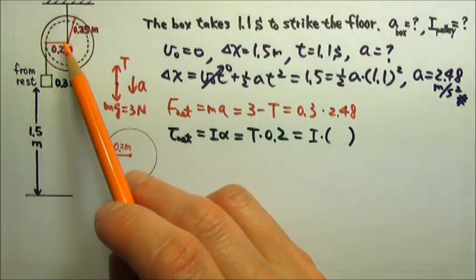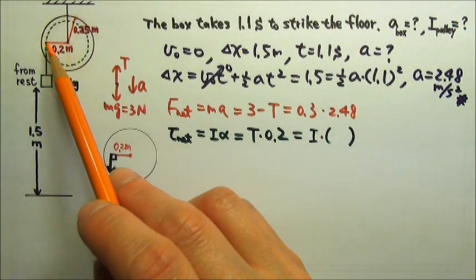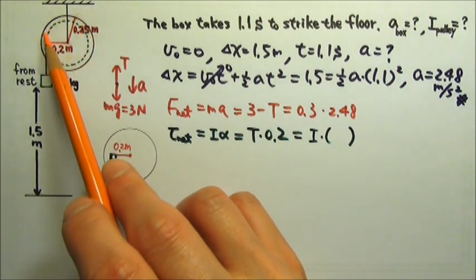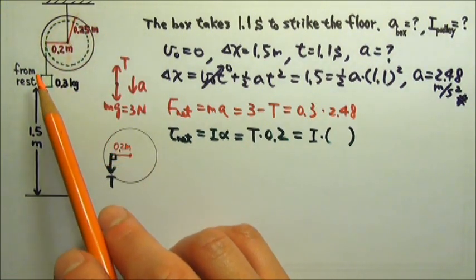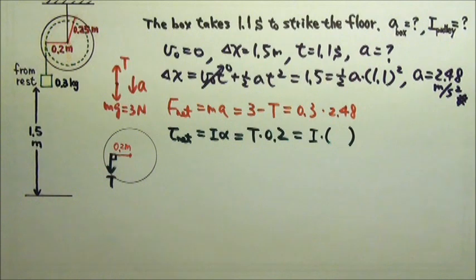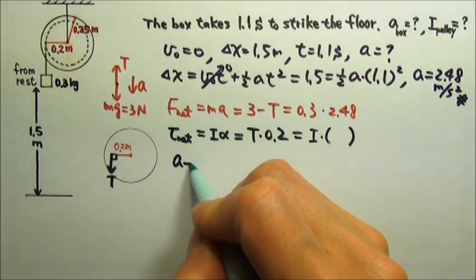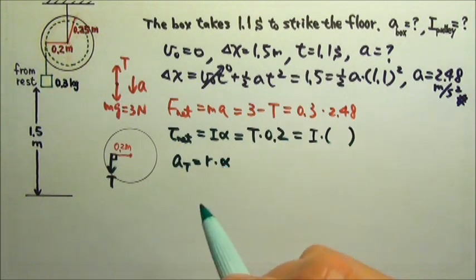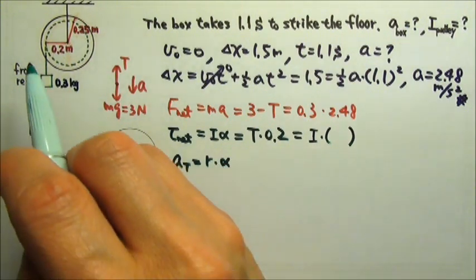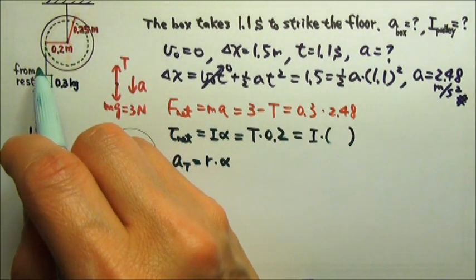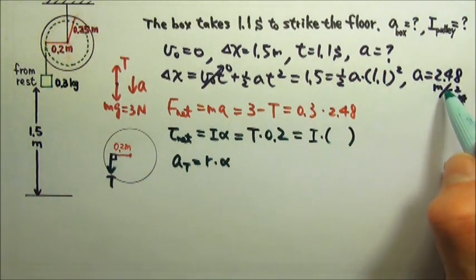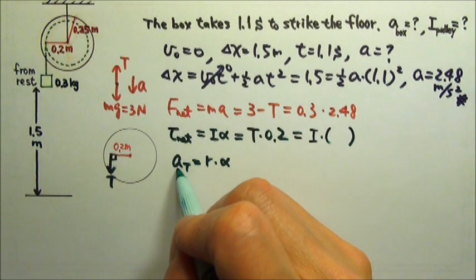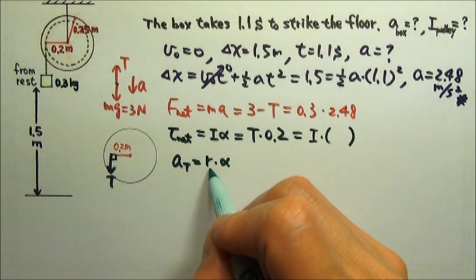The pulley rotates about a fixed axis, and the string does not slip. So the angular motion and the translational motion are related. The tangential acceleration is r times the angular acceleration, and this tangential acceleration is the acceleration of the string, which is the acceleration of the box. So α can be written as the tangential acceleration divided by r.